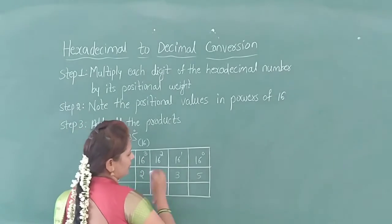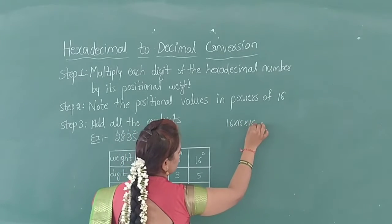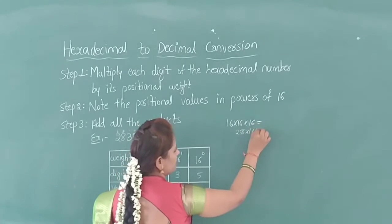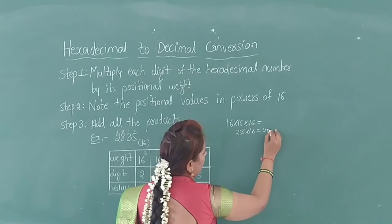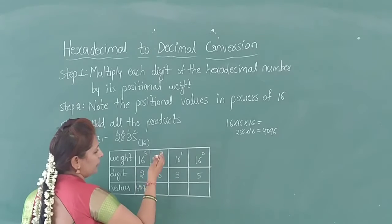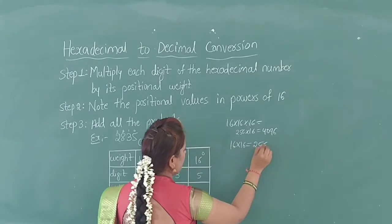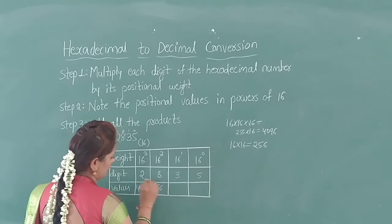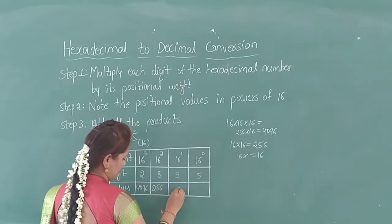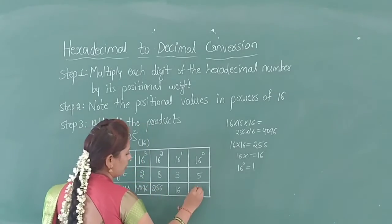16 to the power of 3 equals 4096. 16 to the power of 2: multiply 16 two times, which gives 256. 16 to the power of 1 is equal to 16. 16 to the power of 0: anything raised to 0 equals 1.